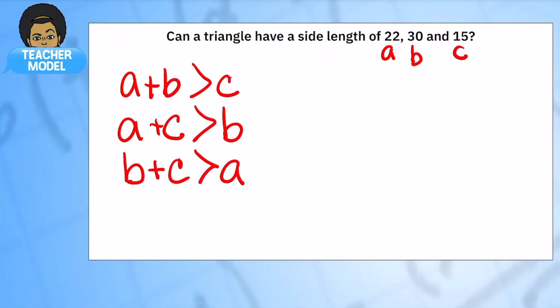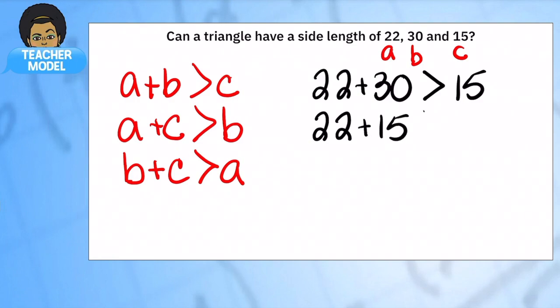So a is equal to 22, so let's put it in there. So is 22 plus 30 bigger than 15? Yes. Let's try the second one. Is 22 plus 15 bigger than 30? Well yeah, this makes 37, so yeah, bigger than 30. So so far we're two for two - this would make a triangle.